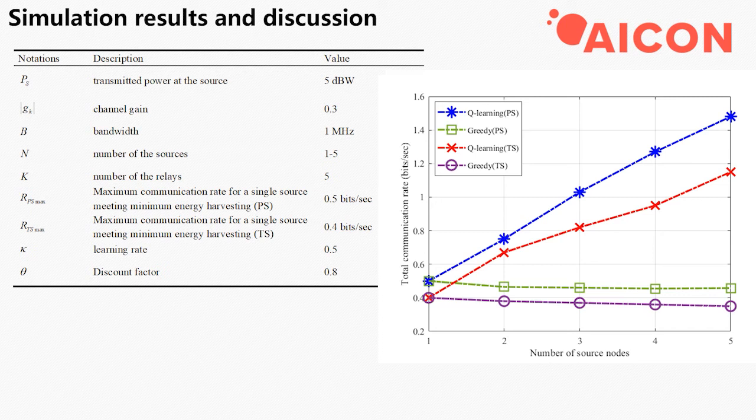The result of another experiment is the total throughput. It can be seen that the traditional algorithm is able to obtain the current optimal relay, but it can't solve the congestion situation. As the number of source nodes increases, the gap between the two methods gradually increases. That is why we use Q-learning.